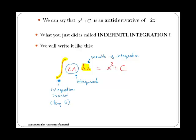In the right hand side then we have x squared plus c, which we said is called an antiderivative, and you have to remember to add always c, which is the constant of integration.